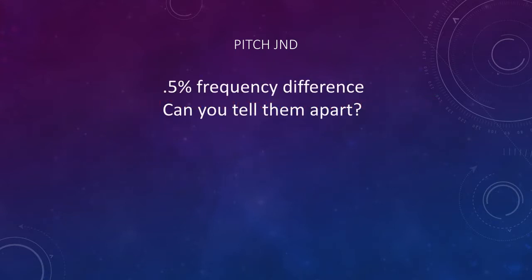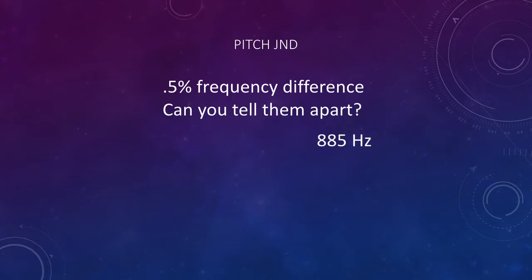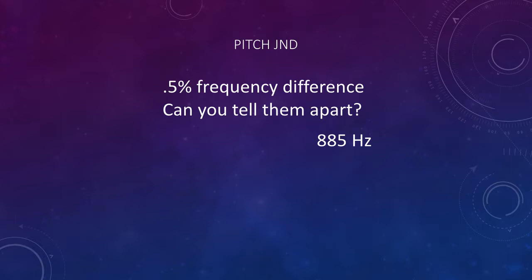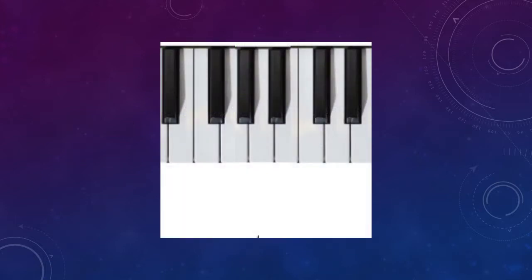To get an idea of what 0.5% frequency difference means, here are two tones that are 0.5% different in pitch, at 880 and 885 Hz. Here are two piano notes that are 880 and 885 Hz. For another reference, the frequency difference between two adjacent notes on a piano — a musical semitone or a half-step — is 6% and sounds like this.